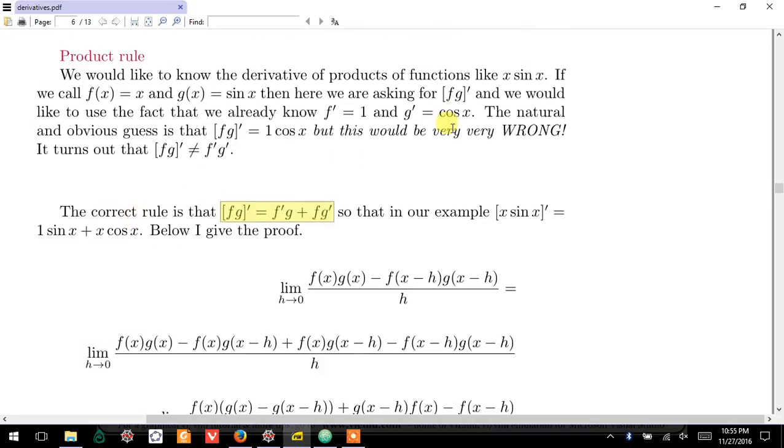And it would tell us in this particular example, like x sine x, that you take the derivative of x, which is 1, times sine, not the derivative of sine, sine. So you get 1 times sine. And over here, you leave x alone and take the derivative of sine, which is cosine. So you get x cosine x.